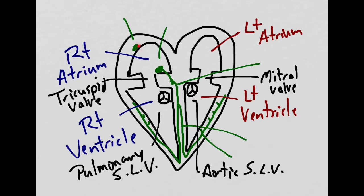This portion of the heart is the SA node, or the sinoatrial node. It is also considered the pacemaker of the heart. The next node is the atrioventricular node, and there is a slight delay in the conduction at this area.